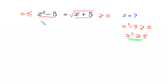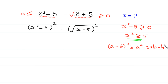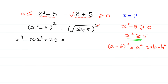Now let's start by squaring both sides. x squared minus 5, whole squared, is equal to square root of x plus 5, squared. According to the algebraic identity, a minus b whole squared equals a squared minus 2ab plus b squared. So x squared minus 5 whole squared equals x to the power 4 minus 10x squared plus 25, and the square cancels with the square root on the right side, leaving x plus 5.